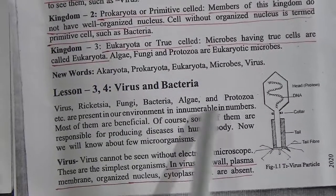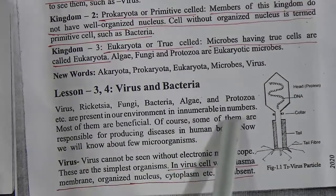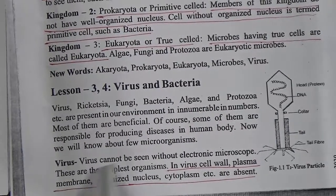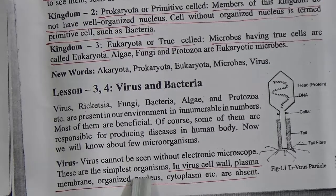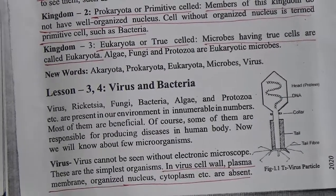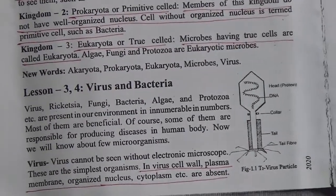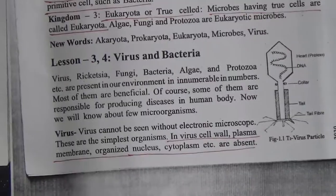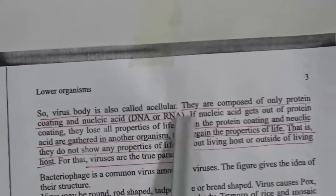Virus, rickettsia, fungi, bacteria, algae, and protozoa are present in our environment in innumerable — meaning uncountable — numbers. Most of them are beneficial; of course, some are responsible for producing diseases in the human body. Virus cannot be seen without an electronic microscope. In a virus, cell wall, plasma membrane, organized nucleus, and cytoplasm are absent. As we know about coronavirus, this virus has no proper organized cell wall, plasma membrane, or organized nucleus.